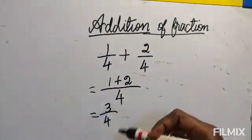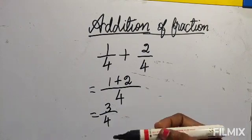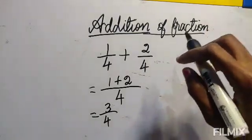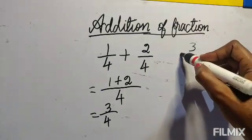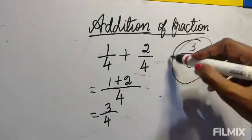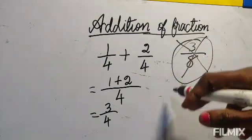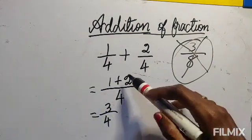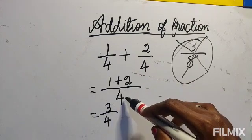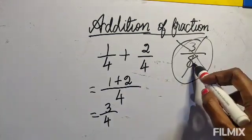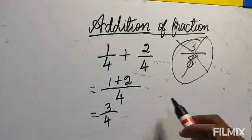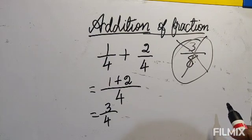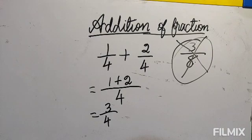Most students make a mistake — even after I've taught for two years, I've seen most of them add the numerator and also add the denominator and write three by eight. This is a wrong answer. That's why I'm telling you: don't miss this method. If you follow this step without skipping, you will not make that mistake and your answer will be correct. Try to write all the steps.